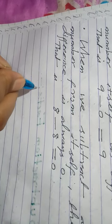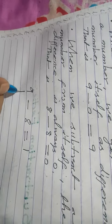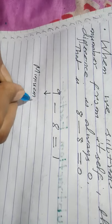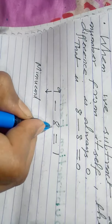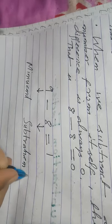Facts in brief. 9 minus 8 equal to 1. 9 is minuend, 8 is subtrahend and 1 is difference.